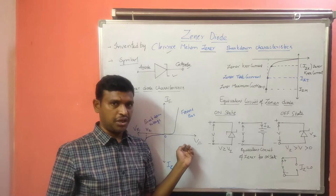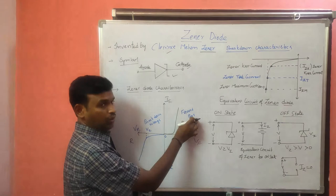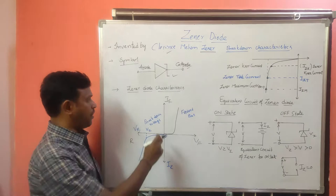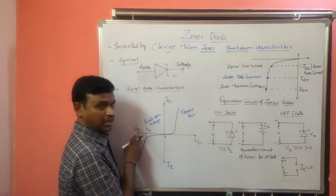The characteristics of the GINA diode in forward bias condition are the same as a normal PN junction diode. On the x-axis we have forward voltage, on the y-axis we have forward current. The negative x-axis is reverse voltage and the negative y-axis is reverse current.